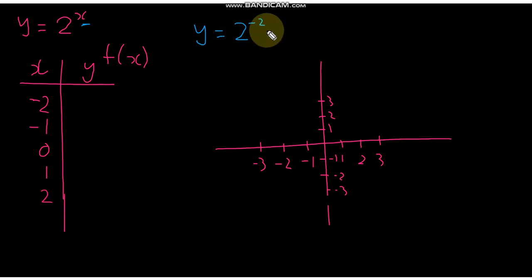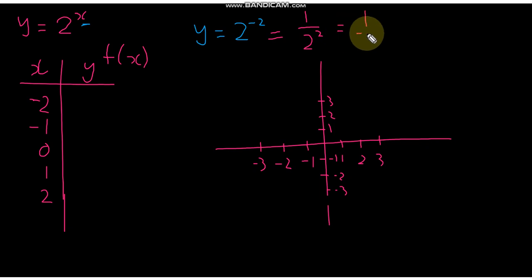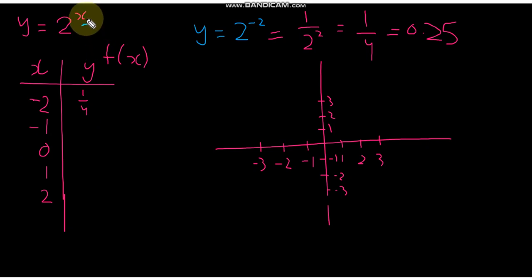When x = −2, we have y = 2 to the power of −2. You know that a negative power means we take the reciprocal, so that equals 1 over 2² = 1/4 = 0.25. So when x is −2, y is 1/4.